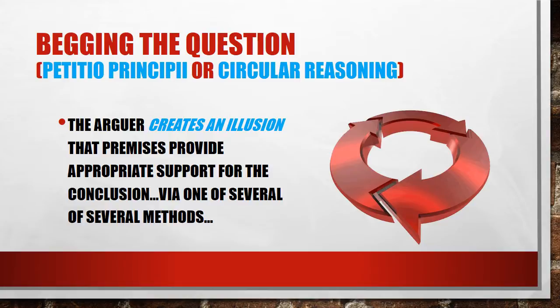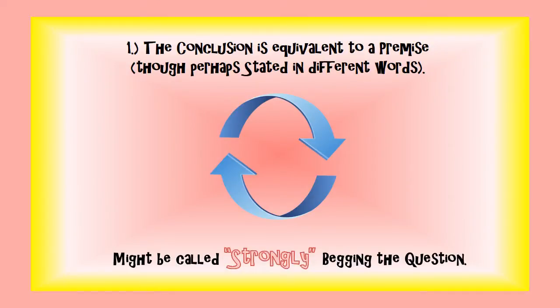So this can happen in one of several ways. The conclusion could be just the same thing as a premise, maybe just restated in different words. When that happens, sometimes people call this strongly begging the question — you said the exact same thing in your conclusion as you did in your premises.